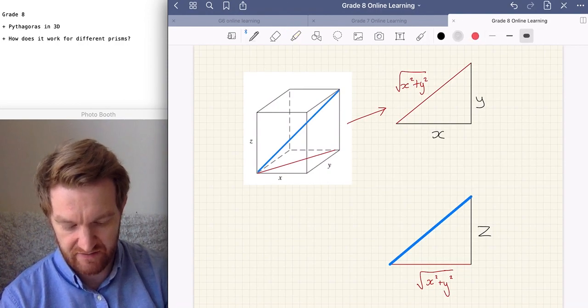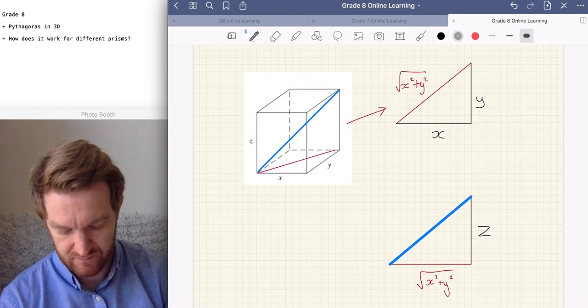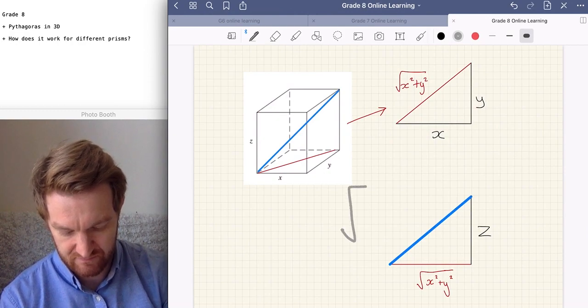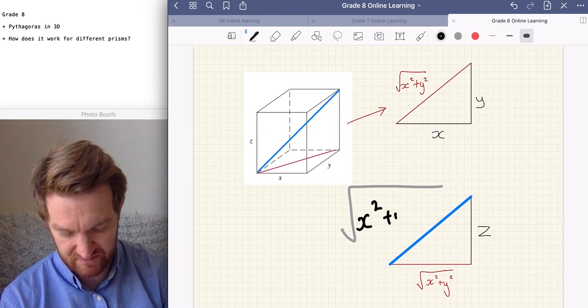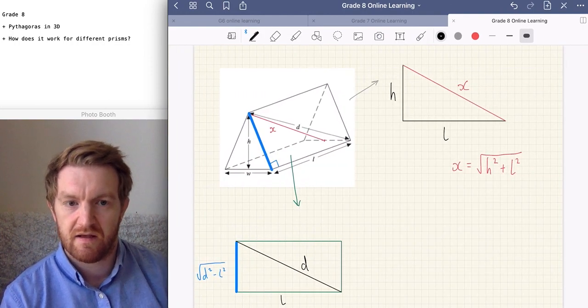So, just to recap, first diagram, second diagram, and we're looking for square root of all three dimensions.